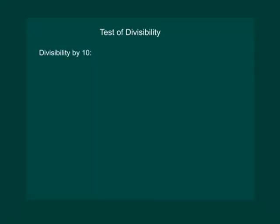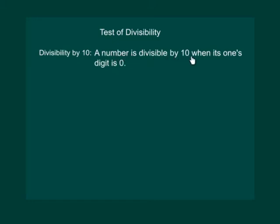Let us study the divisibility by 10 of all the numbers. We know that a number is divisible by 10 when its 1's digit is 0. For example, 100 is divisible by 10, 30 is divisible by 10, but 27 is not divisible because in the 1's place we have 7.